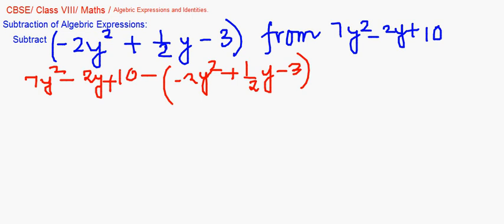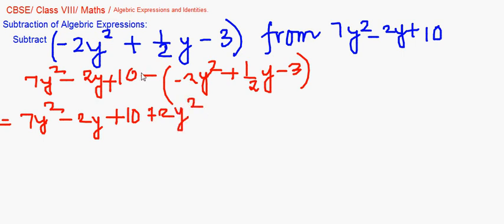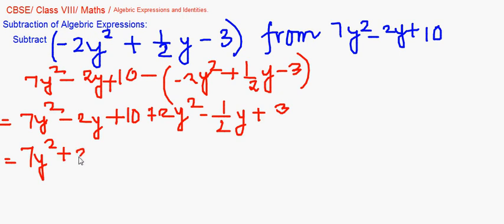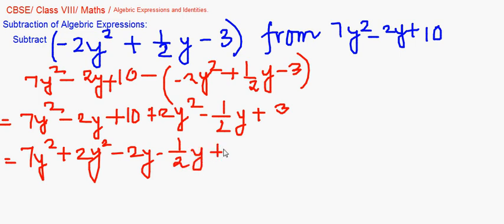Now the next step is the removal of brackets. So we have 7y² minus 2y plus 10. Here, minus and minus gives us plus, so it is plus 2y². Minus and plus gives us minus, so it is minus half y. And minus and minus is plus, so it is plus 3.